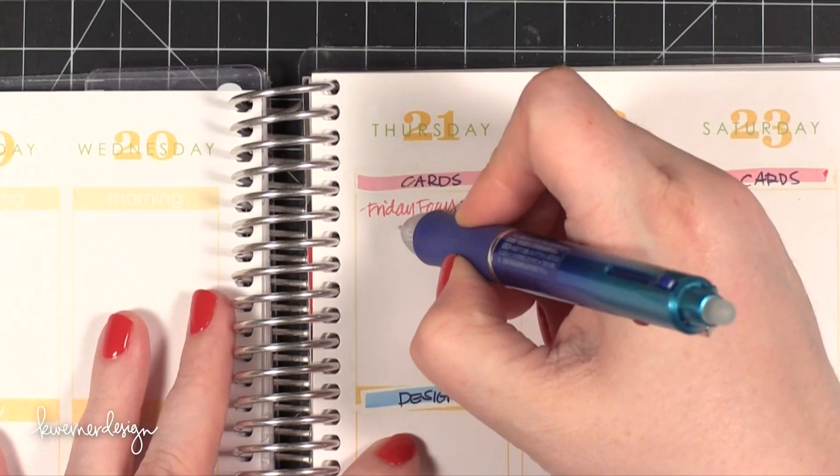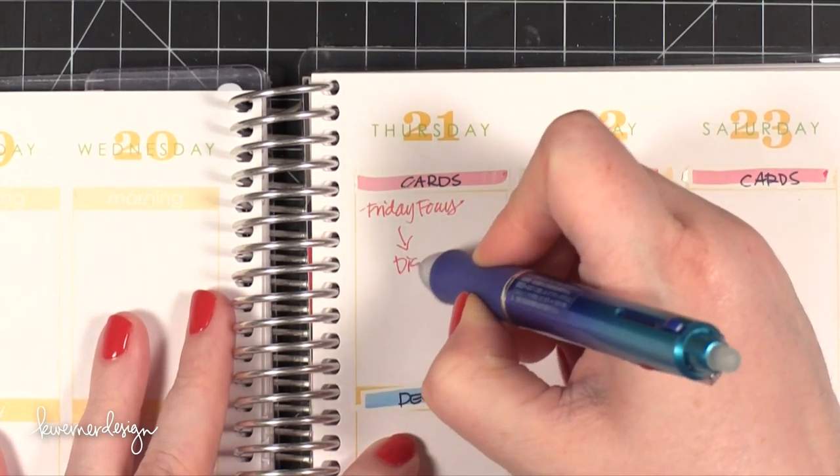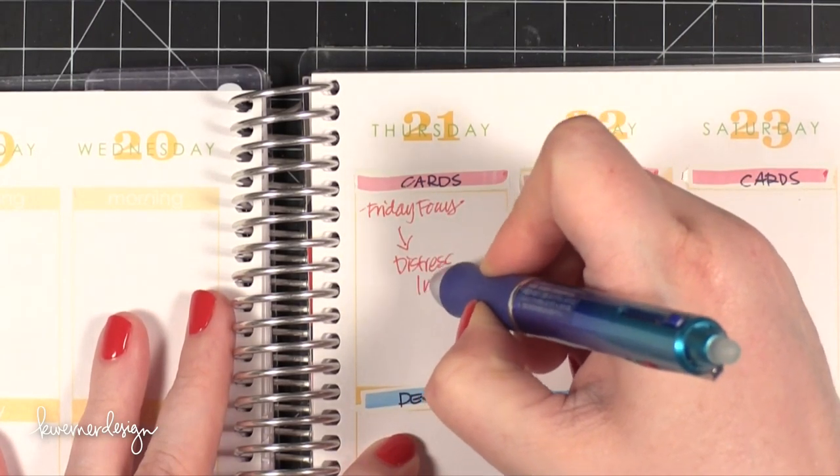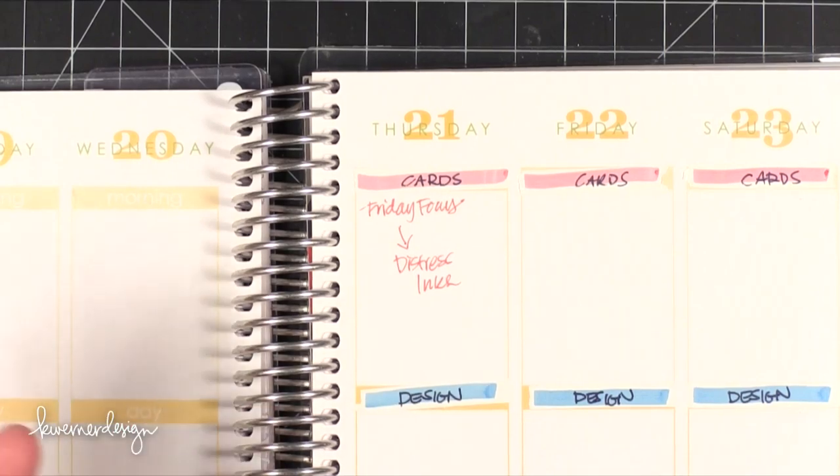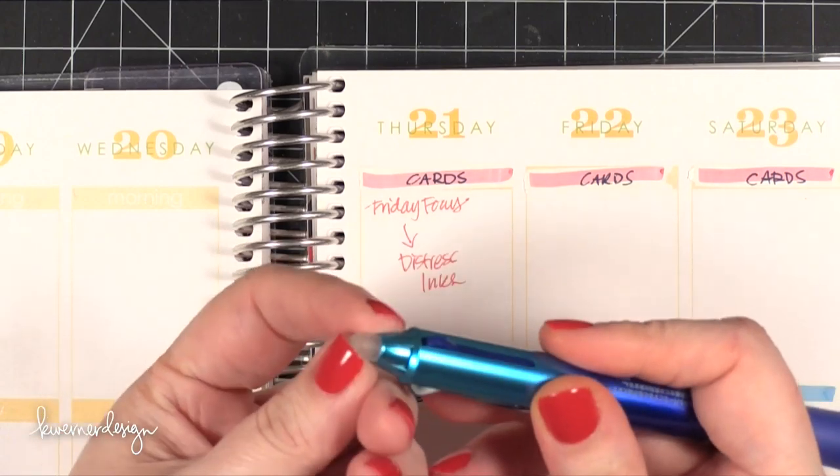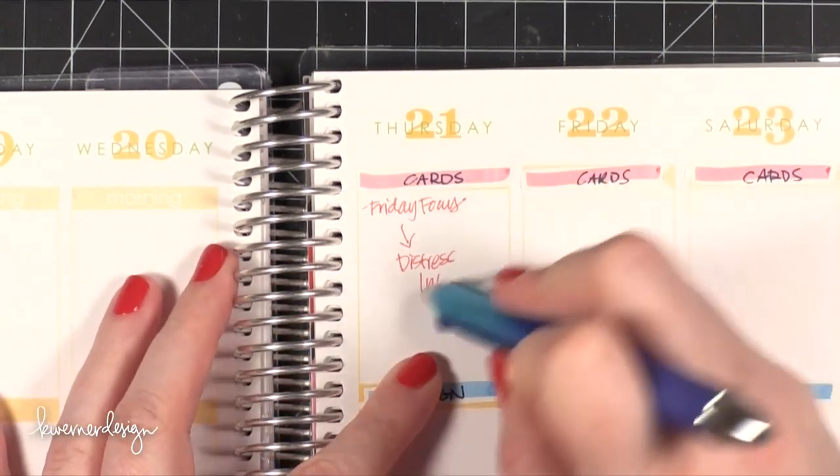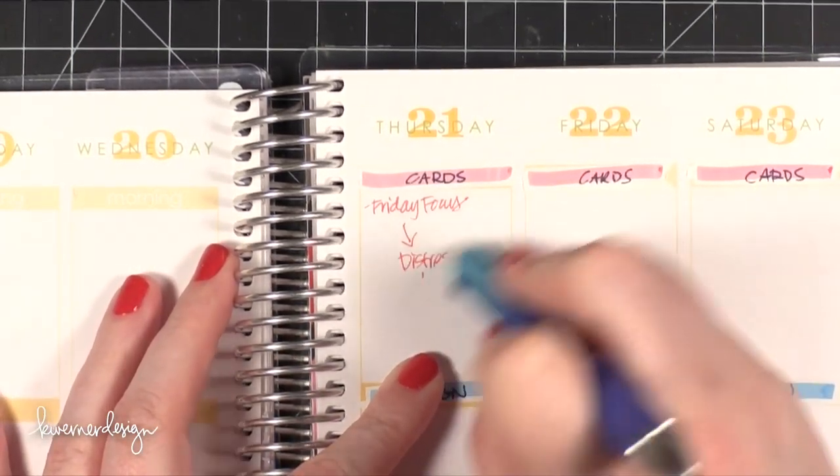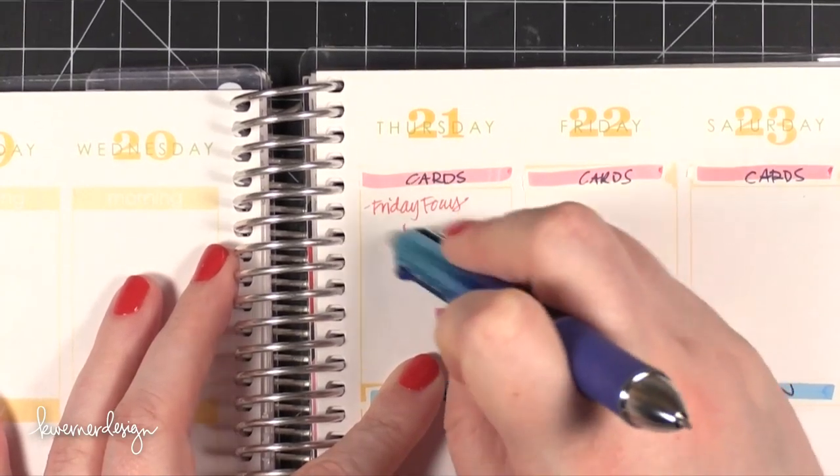So I might go like this, Distress Inks. And then let's say that sometime throughout the week I've decided I don't want to use Distress Inks. I'm going to focus on something else. It has the eraser on the other end. And I can come in and erase my little line about Distress Inks.